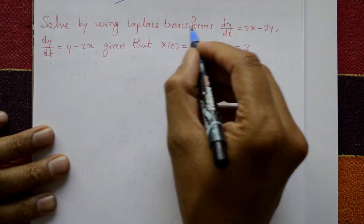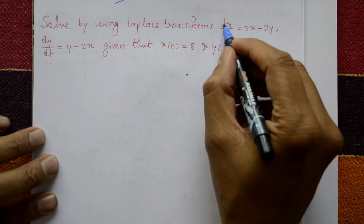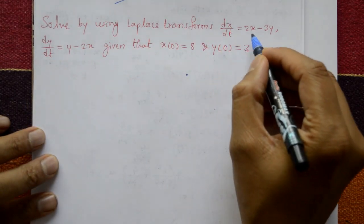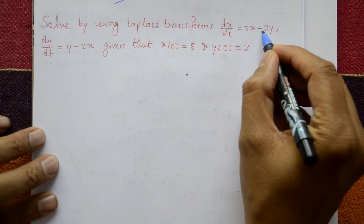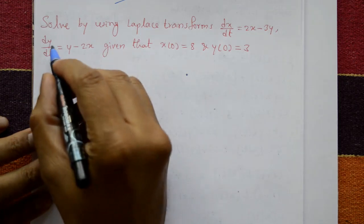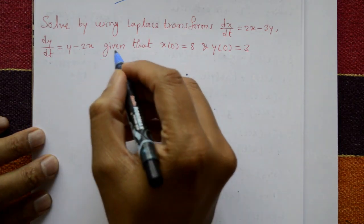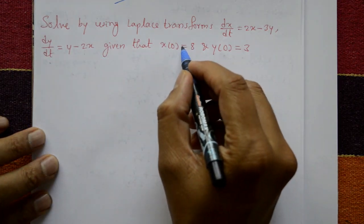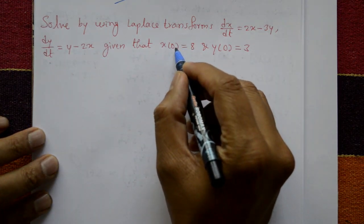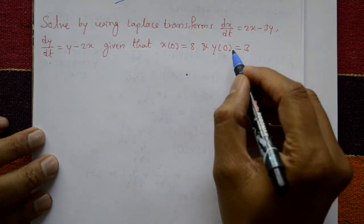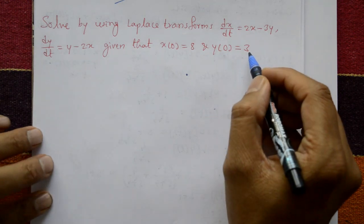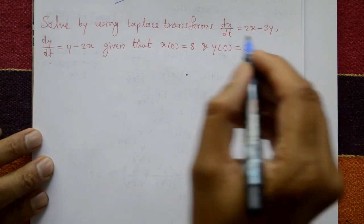Solve using Laplace transform: dx/dt = 2x − 3y and dy/dt = y − 2x, given that x(0) = 8 and y(0) = 3.